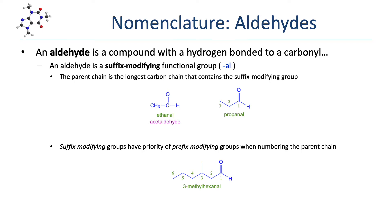As with other suffix-modifying functional groups, the parent chain is the longest carbon chain that contains the functionalized carbon. In this first example, the longest carbon chain that contains the functionalized carbon is a two-carbon chain, making this an ethane derivative. We drop the -e and add -al, and the name becomes ethanal. Ethanal is almost always referred to by its common name, acetaldehyde.